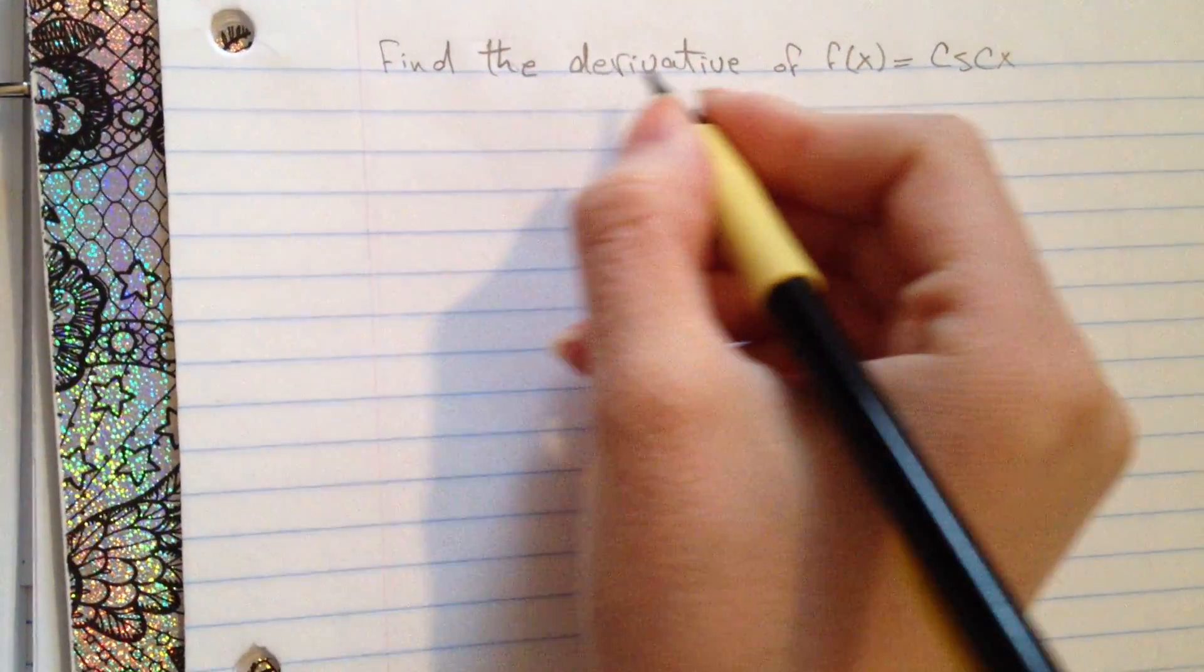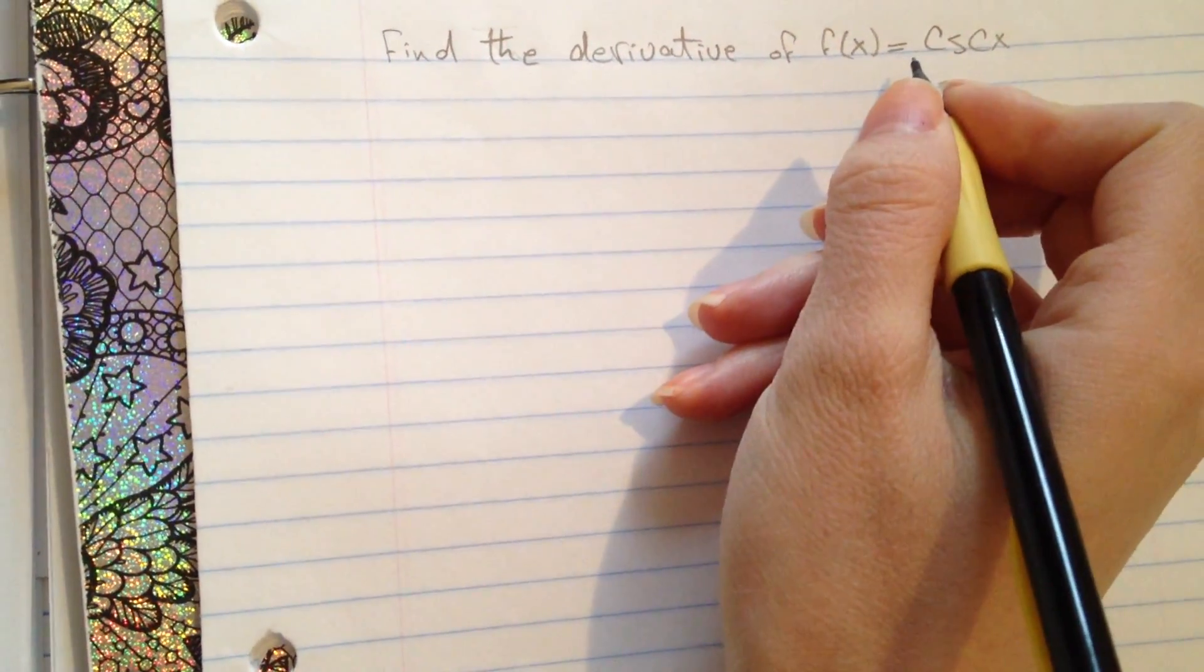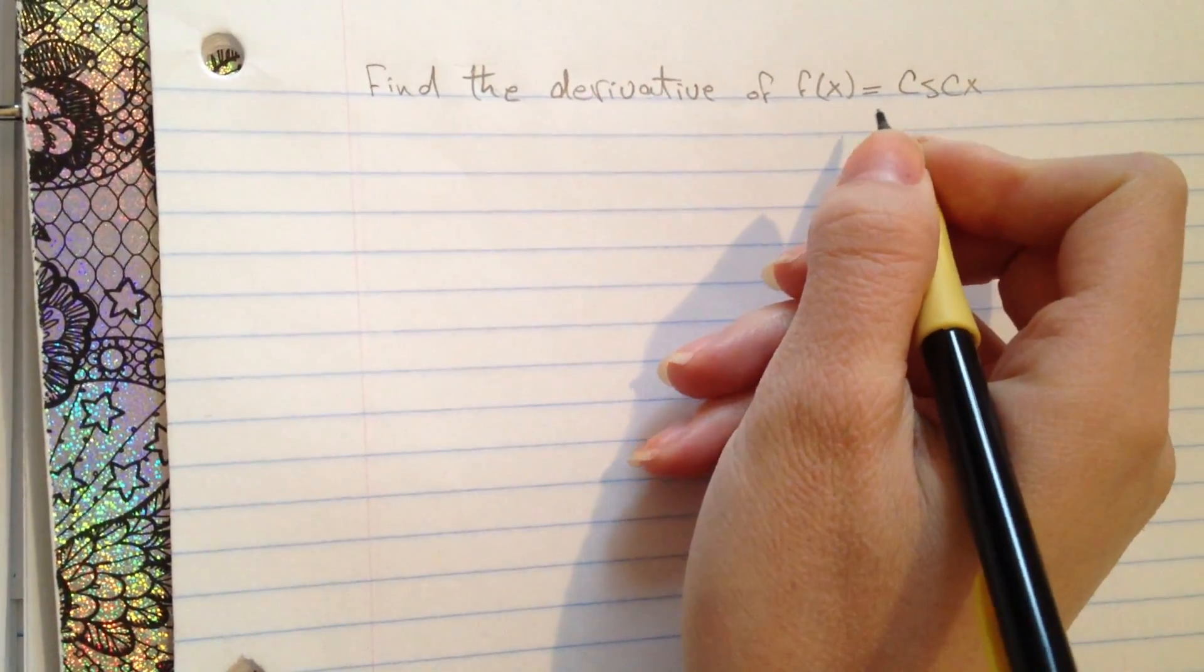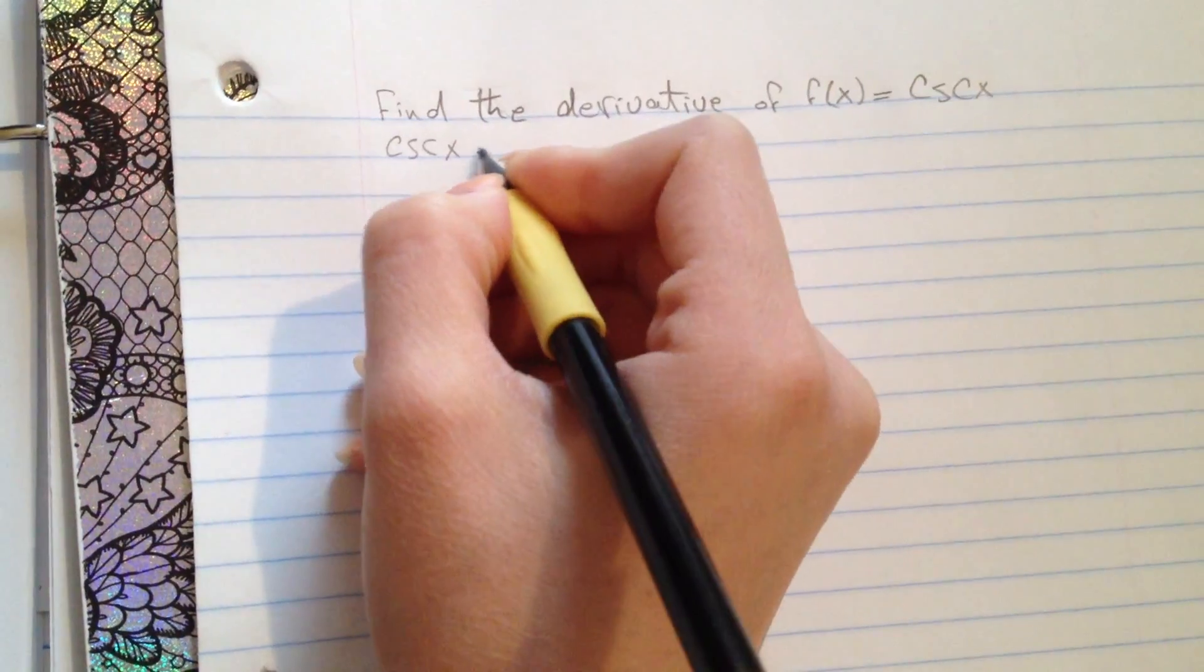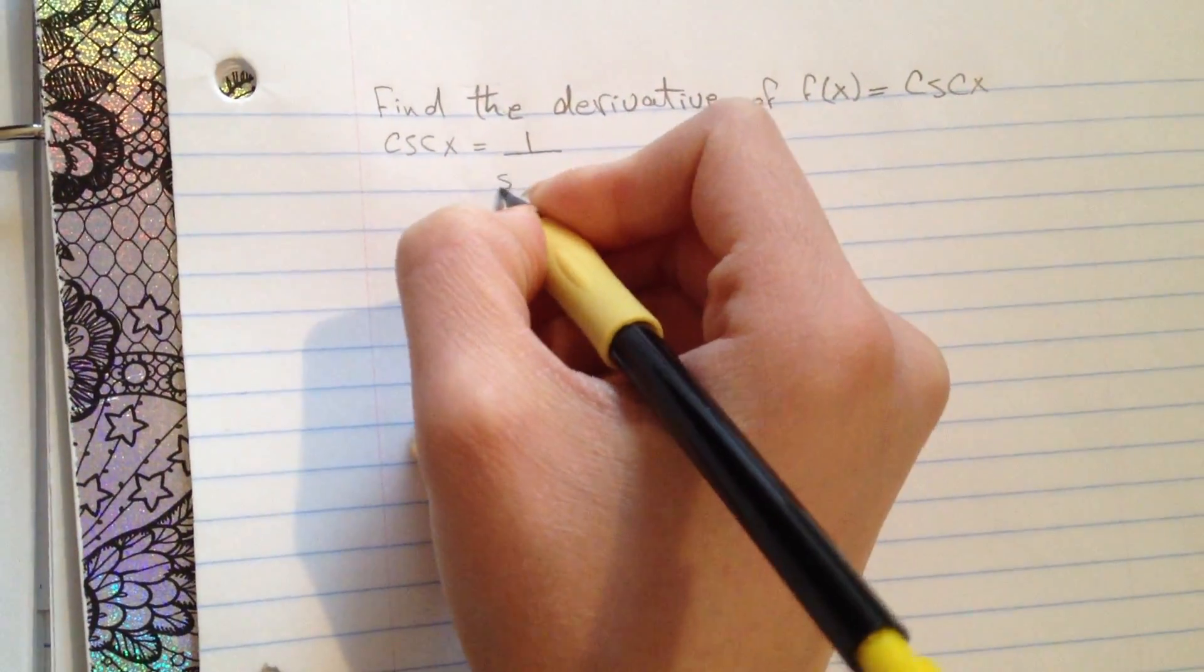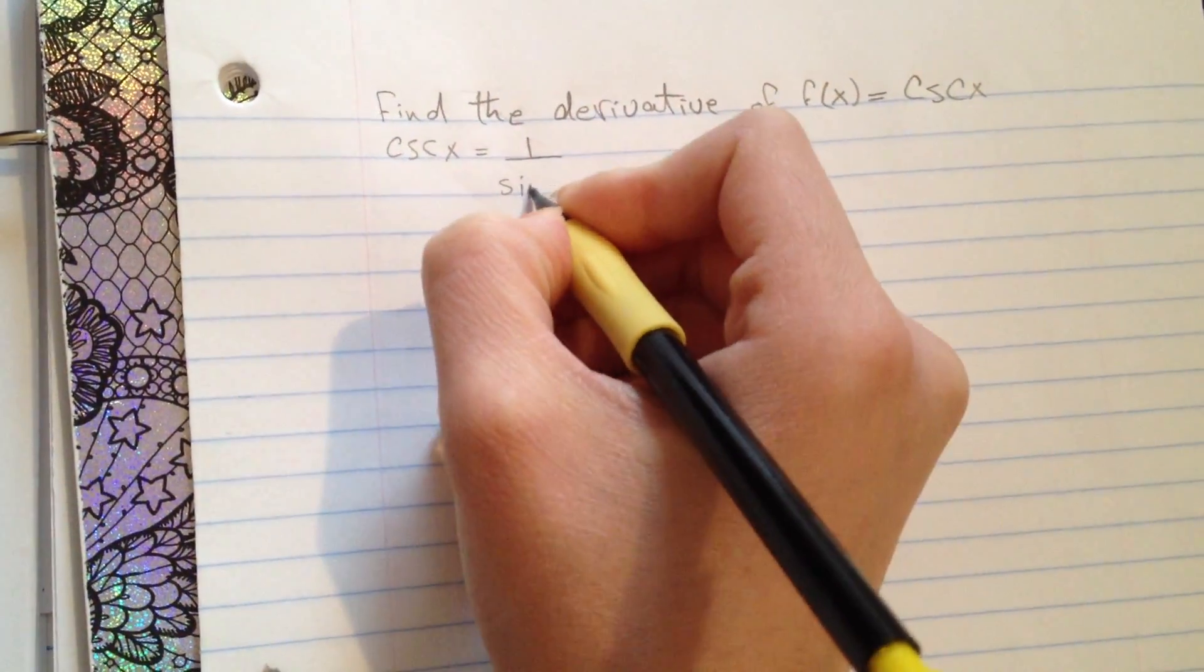Hello, today we're going to find the derivative of f(x) = csc(x). We have csc(x) = 1/sin(x).